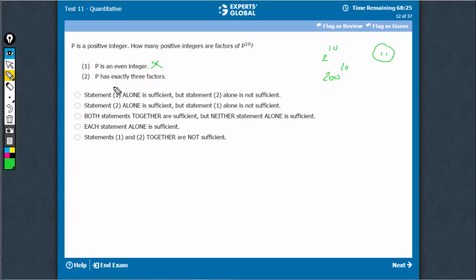Come to statement 2. A number has exactly 3 factors only when it happens to be square of a prime number. For example, 3 raised to power 2. The only way 3 can be reached is it is square of a prime number.